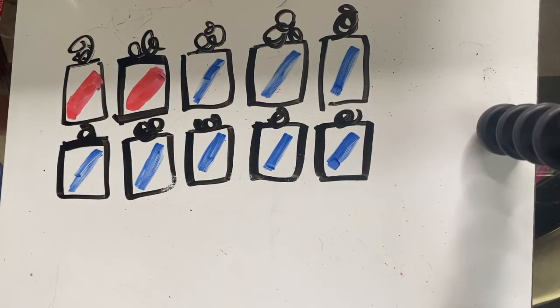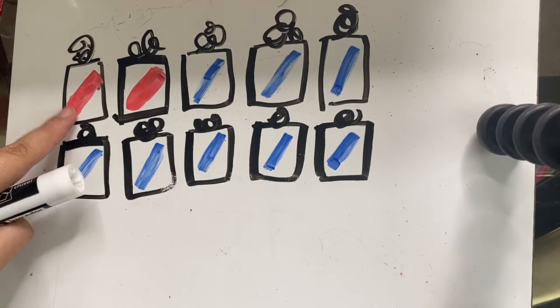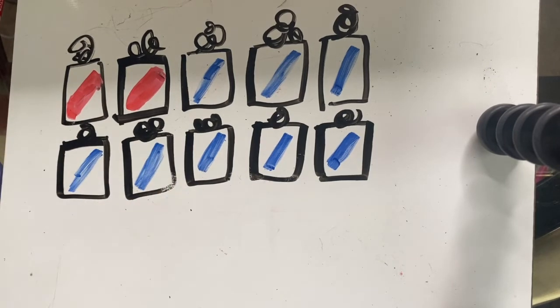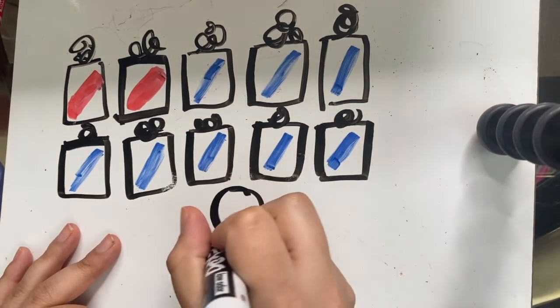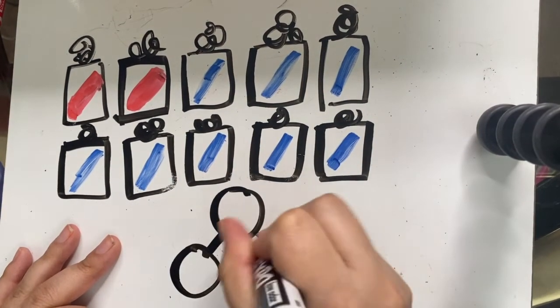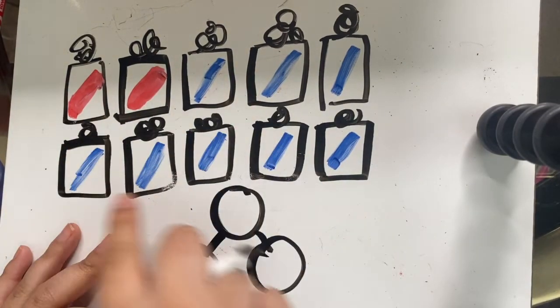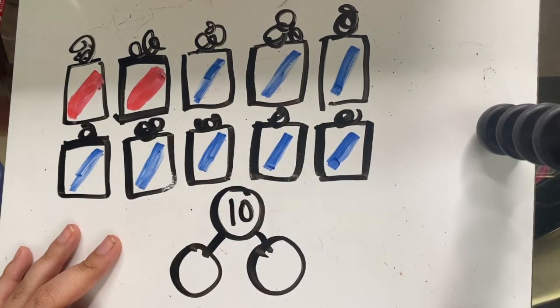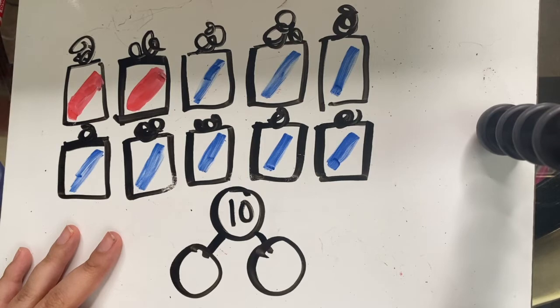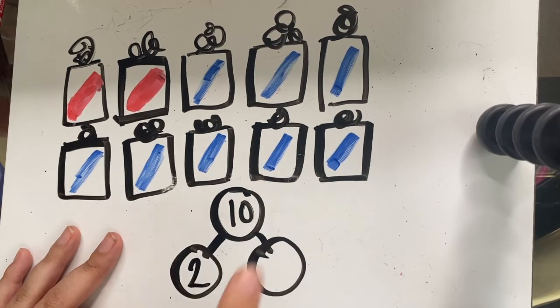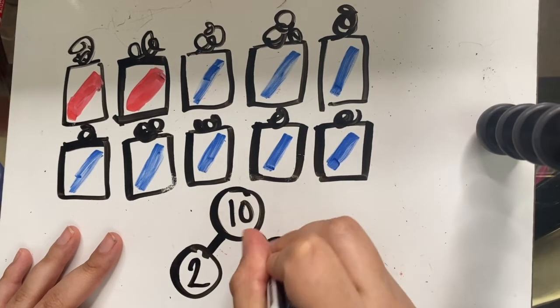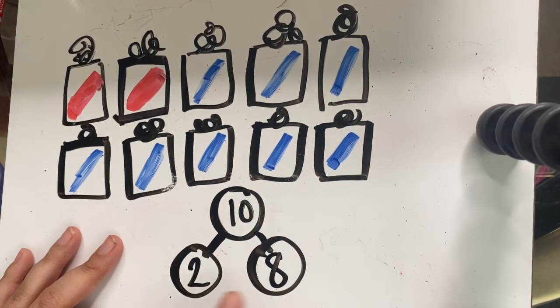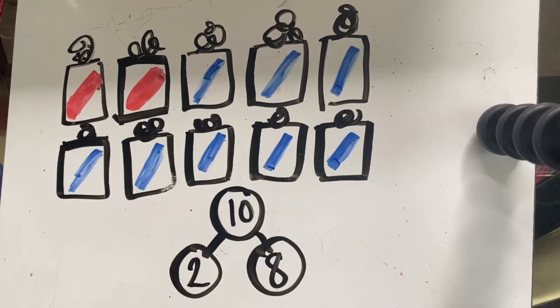So, how many are red? Two. And how many are blue? Eight. So how many all together? Ten. How many with a red stripe? Two. How many with a blue stripe? Eight. So, eight and two make 10. We just found another number partner of 10.